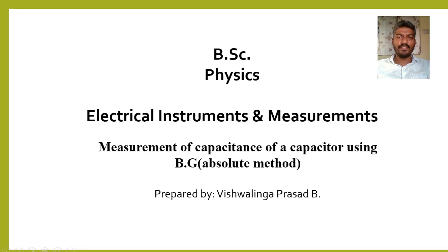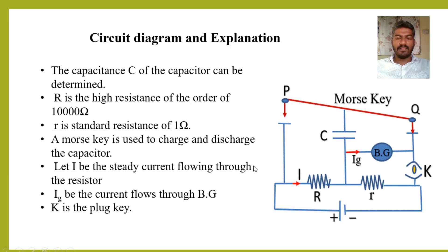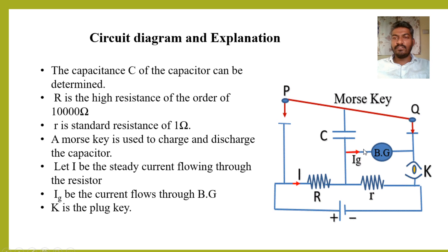In this session we are going to study the measurement of capacitance of a capacitor using a ballistic galvanometer. The circuit is very simple. It contains a battery of EMF V, two resistors — capital R and small r. The value of capital R is 10,000 ohm and the value of small r is 1 ohm. The circuit also contains a capacitor and a ballistic galvanometer.